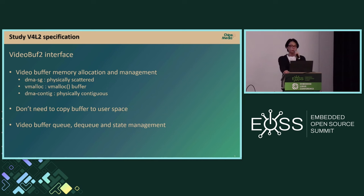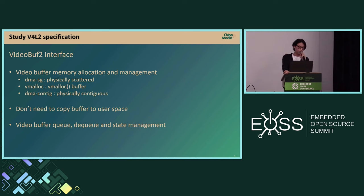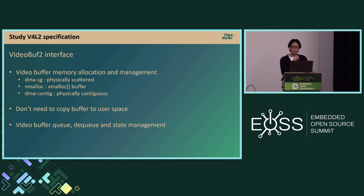V4L2 driver supports several interfaces to the host. The first is the video buffer interface, related to video buffer memory allocation and management. It supports three buffer types: DMA SG for physically scattered memory, Vmalloc for Linux kernel memory, and DMA contiguous for physically contiguous memory. This interface supports file descriptors for each buffer, avoiding unnecessary copies between user space and driver. It also handles video buffer queue, dequeue, and state management.